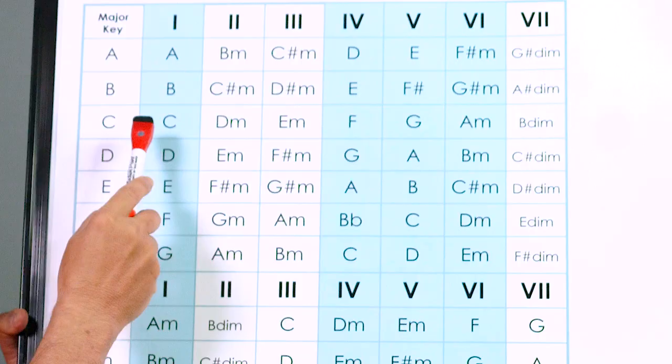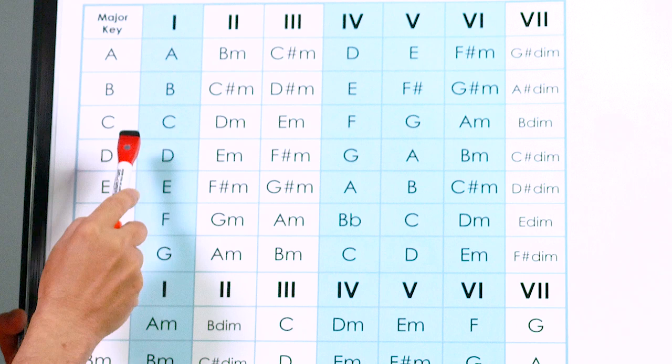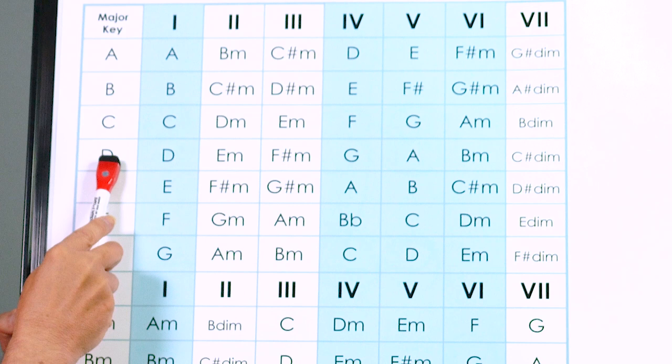Now if you want to change it up, let's say it's a little low for your voice, you want to raise it up, we'll go to the key of D. Every time you came to a C chord, so you start with the key and then go down to the column that you want to change it to, you replace that with a D chord.